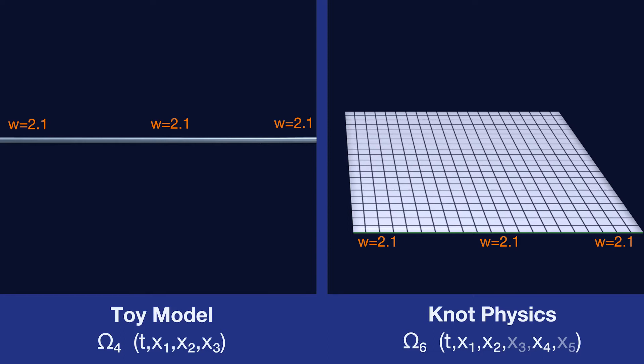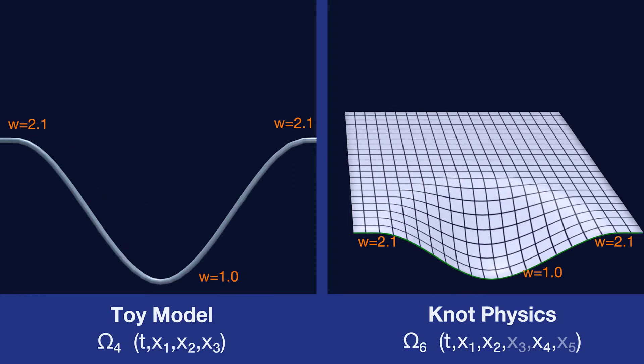We previously saw how the spacetime manifold can be stretched. In that example, we used a knot and pulled that knot in the direction of x4, stretching the manifold along with it.